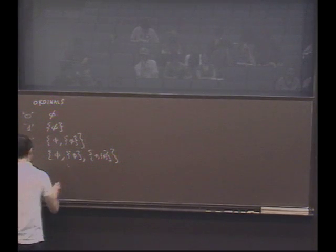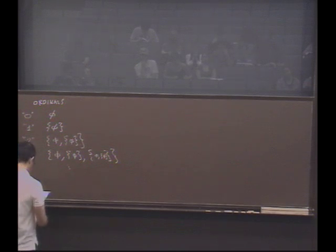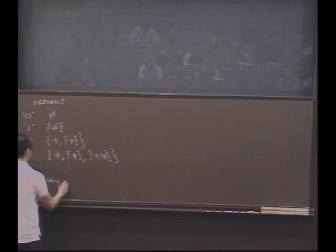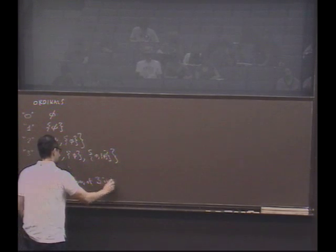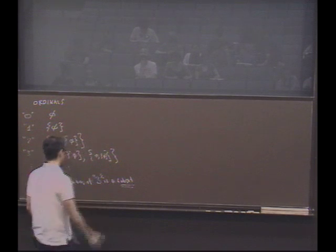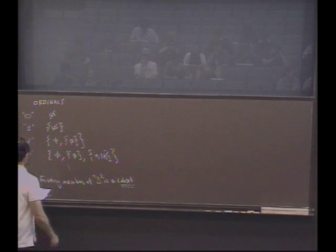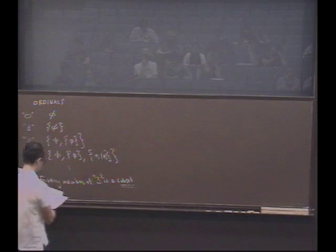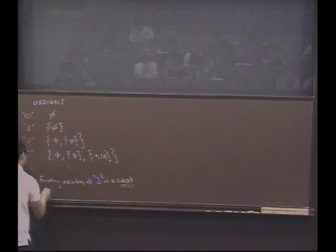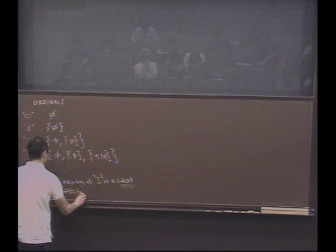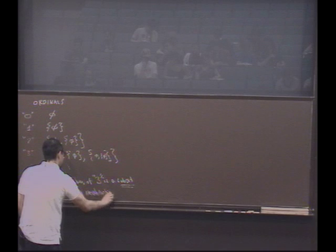Some things to notice here with this construction is that every member of three is a subset. So every member of one of these ordinal numbers is a subset of one of the ordinal numbers. Would you agree, one is a subset of two? Is one a subset of three? Yes. Is zero a subset of three? Yes. Is three a subset of two? No. So we're going to order the sets by membership or containment.